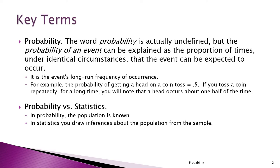For example, if you keep tossing a coin over and over again, you'll note that 50% of the time you'll get a head. So we say the probability of a head is 0.5. Think of it that way, but really there's no good definition of probability.